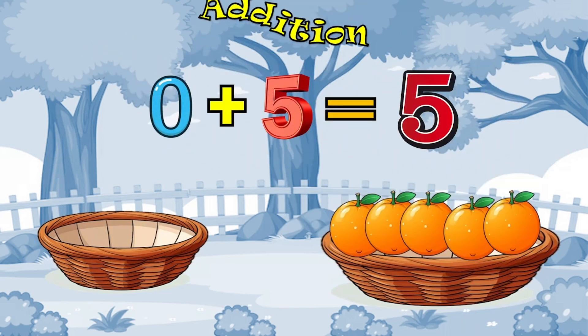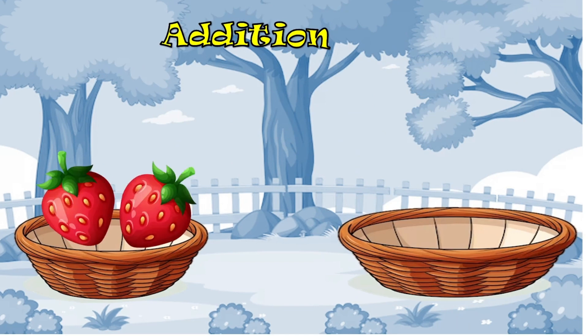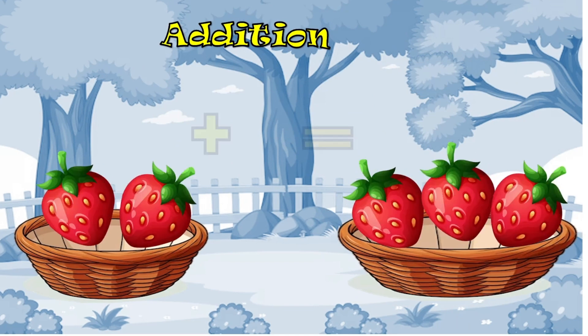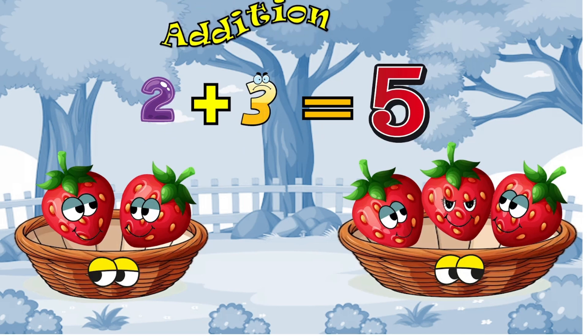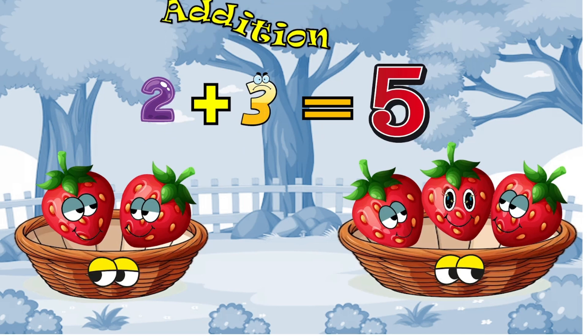These are some strawberries. How many strawberries are there? 2 plus 3 is equal to 5. 2 plus 3 is 5.